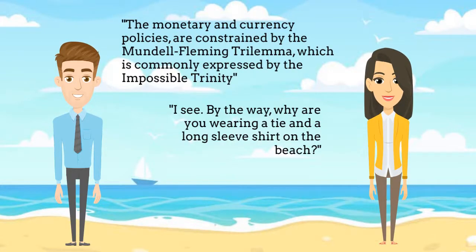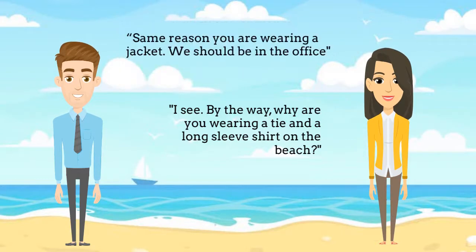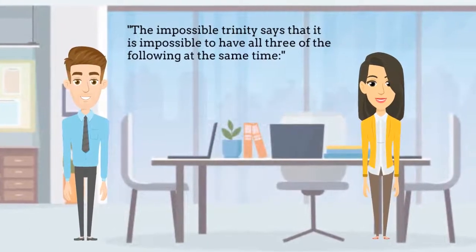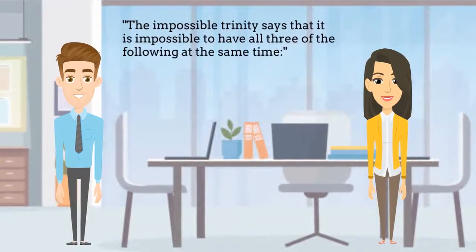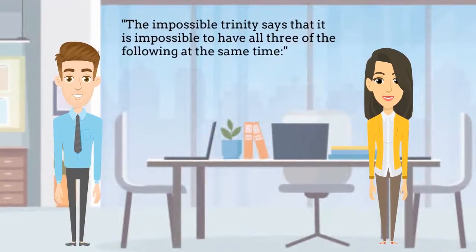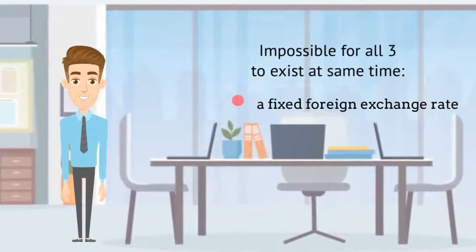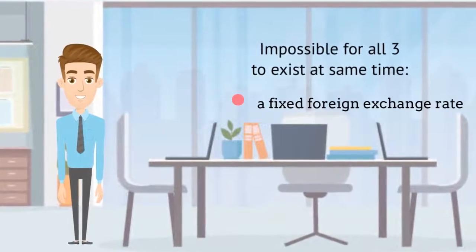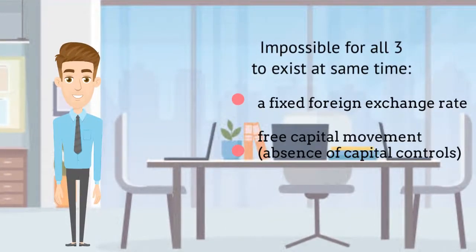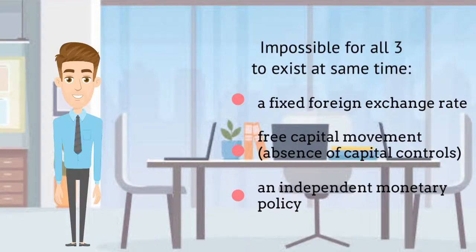I see. By the way, why are you wearing a tie and a long-sleeve shirt on the beach? Same reason you are wearing a jacket — we should be in the office. The Impossible Trinity says that it is impossible to have all three of the following at the same time: a fixed foreign exchange rate, free capital movement, which is the absence of capital controls, and an independent monetary policy.